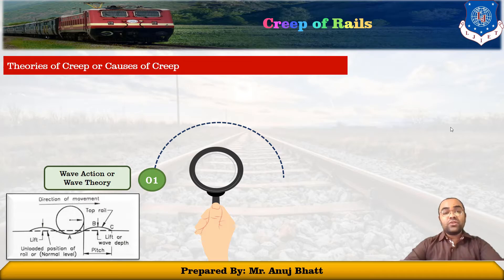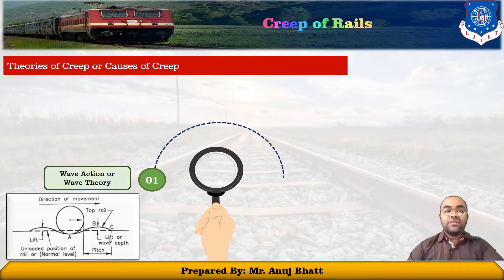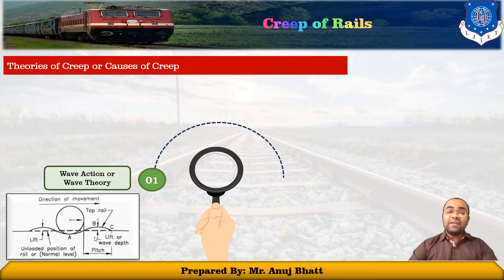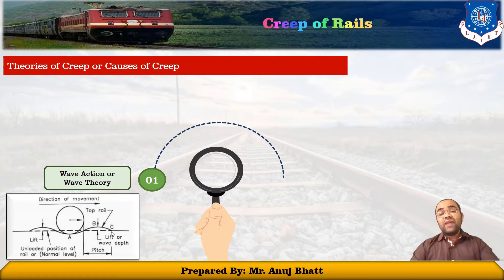The first theory is the wave action theory. In this theory, a wave action or wave motion is set up by moving loads of wheels. A vertical reverse curve A-B-C is formed in the rails ahead of the wheels, resulting from rail deflection under the loads, which mainly causes the wheels to push a wave with a tendency to force the rail in the direction of train motion. On a particular rail section, the joint action of several wheels causes creep. The lift in front of the wheel is carried forward by the wheels, causing creep, whereas the lift at the rear of the wheel returns to its normal position.